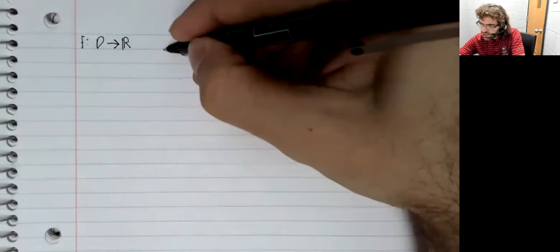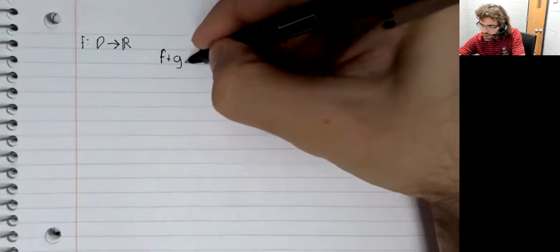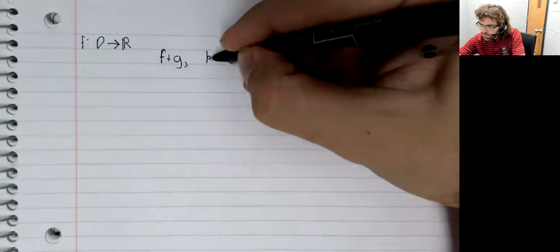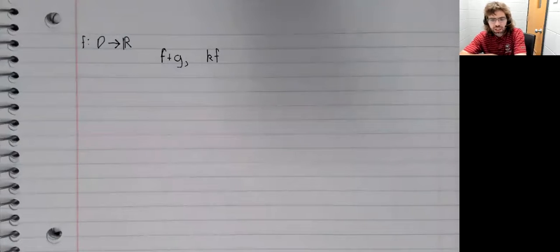We've got to redefine addition and scalar multiplication, and they are both closed. So we have the closure properties that leaves that list of eight properties that addition and scalar multiplication have to satisfy.